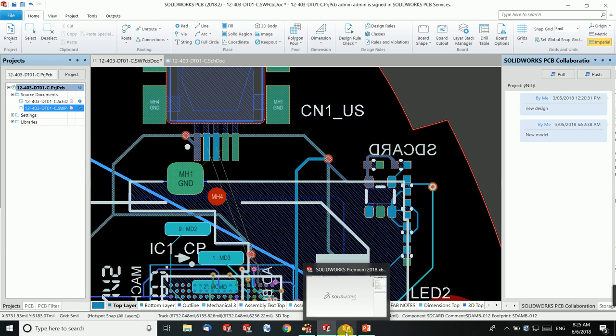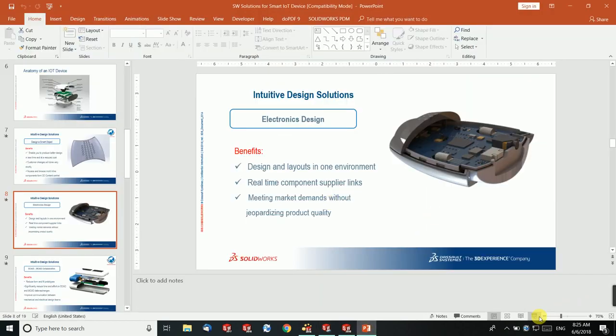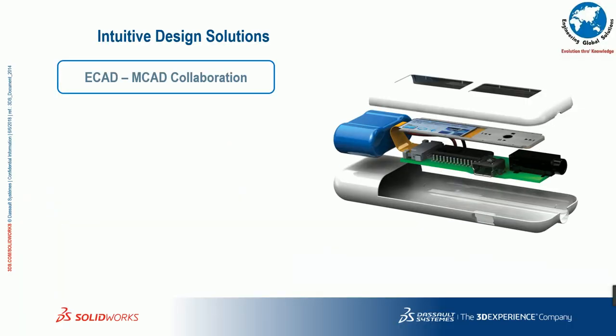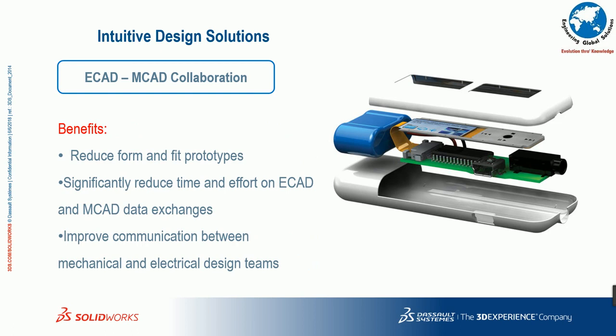Once the electronics design is done, you can directly switch all those things into the mechanical design environment. This lets you find out if any problems will occur when integrating the electrical card with the mechanical card, ensuring fit and function during the design stage. As shown on display, you can reduce fit and form function issues during assembly, and reduce the time and effort spent integrating electrical and mechanical designs in a single environment. This reduces communication errors and allows the electrical and mechanical teams to work together for a better product.